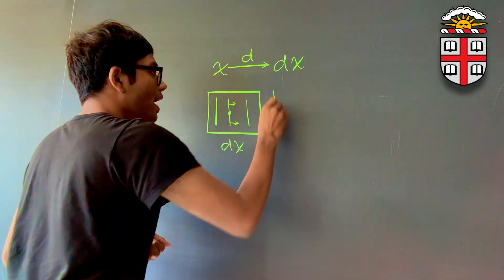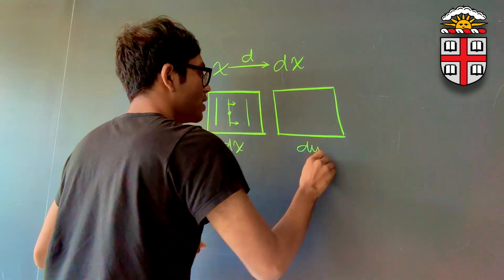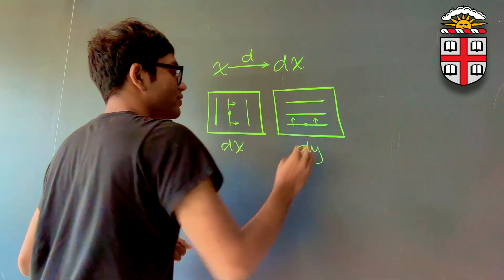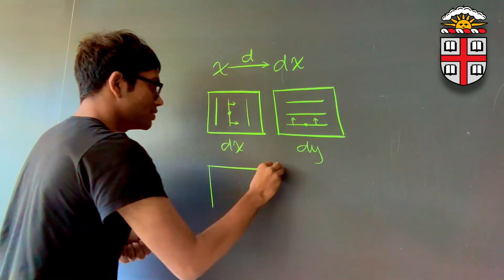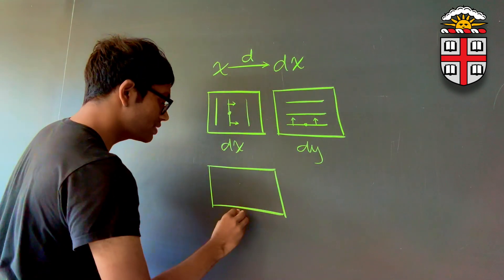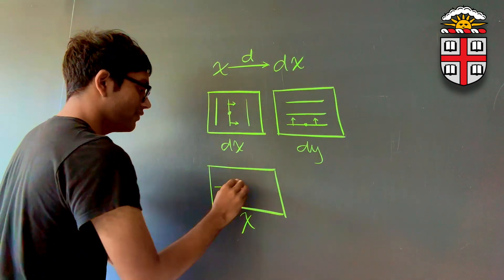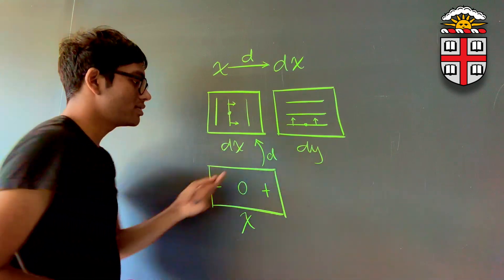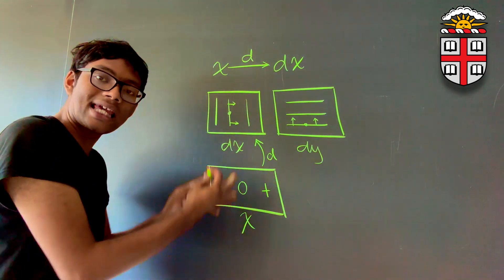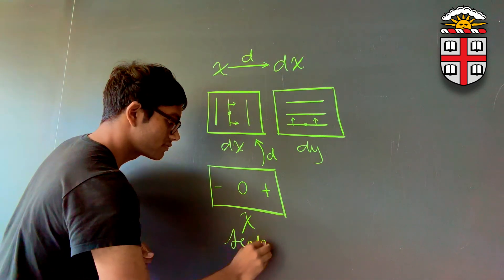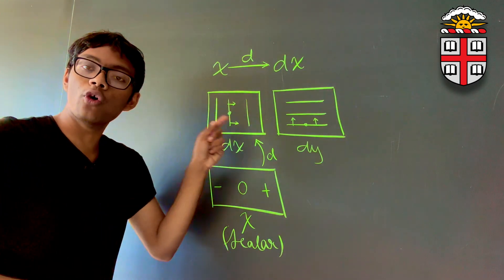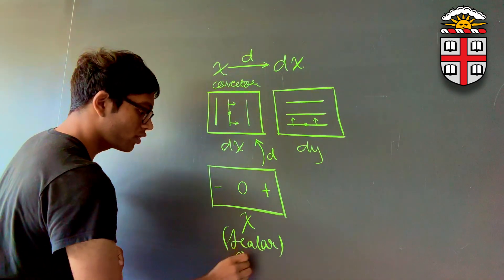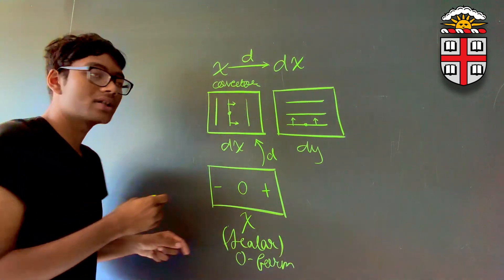In fact, it's a co-vector field with an increasing direction that way and an origin somewhere here. And similarly, dy is also a co-vector field with horizontal contour lines that increase in this direction and has some kind of an origin. What this operator d really does is it takes the scalar field associated with x — which is negative to the left, 0 in the middle, and positive to the right — and converts it into a co-vector field. We call this a 0-form and we call the co-vector field a 1-form.